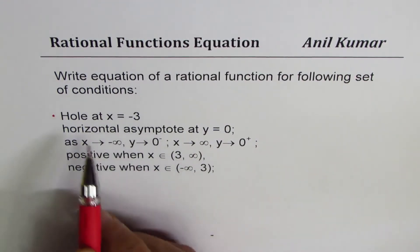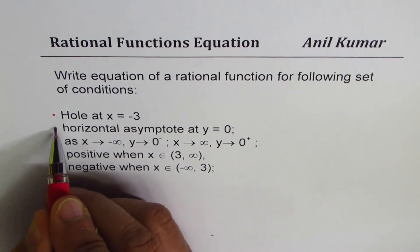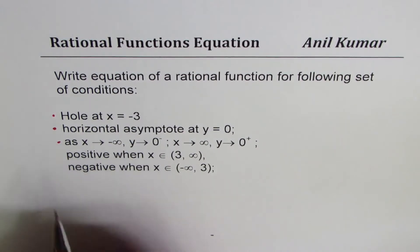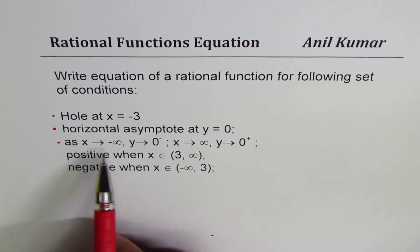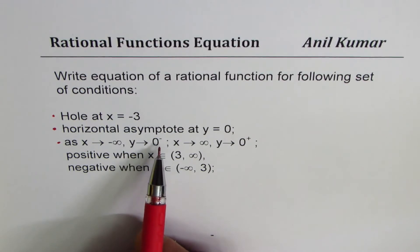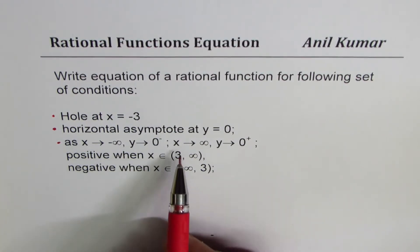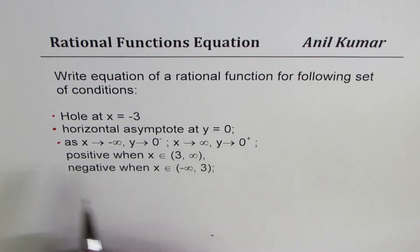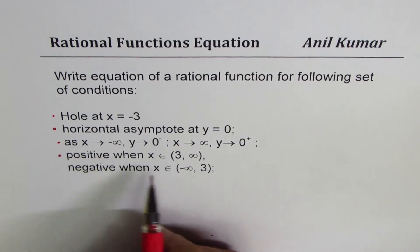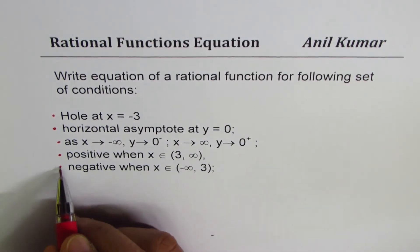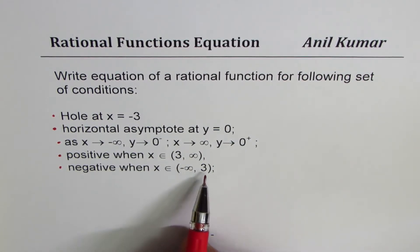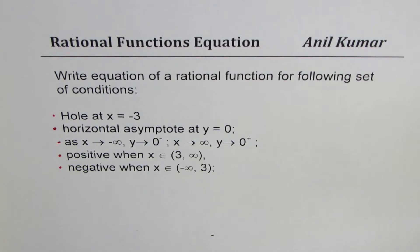The first condition is a hole at x equals minus 3. Then we have a horizontal asymptote at y equals 0. For end behavior: as x approaches negative infinity, y approaches 0 from below — the negative side. As x approaches positive infinity, y approaches 0 from above. The function is positive when x belongs to 3 to infinity, and negative when x belongs to negative infinity to 3. These are the conditions given to us.